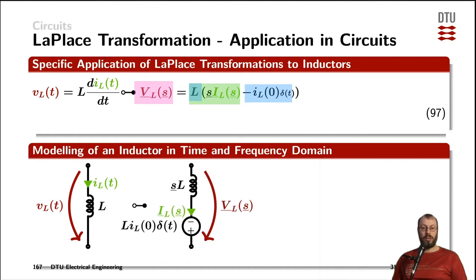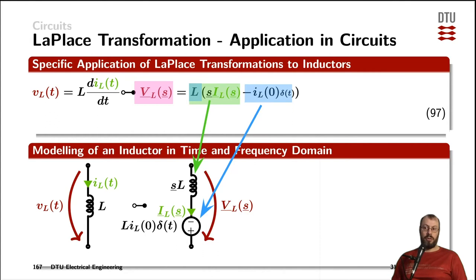That means we can use Kirchhoff's voltage law to express the summation as two series-connected elements: the first one being the inductor itself, and the initial value being represented by a voltage source with the minus sign, having the amplitude of the inductance times the initial current multiplied by the Dirac function. This means it is only valid at time t equals zero, and afterwards this voltage source simply short-circuits.